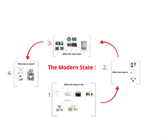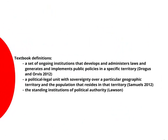Let's look at some formal definitions out of textbooks. One holds that a state is a set of ongoing institutions that develops and administers laws and generates and implements public policies in a specific territory. Here's another: a state is a political legal unit with sovereignty over a particular geographic territory and the population that resides in that territory. And here's a nice simple one: a state is the standing institutions of political authority.